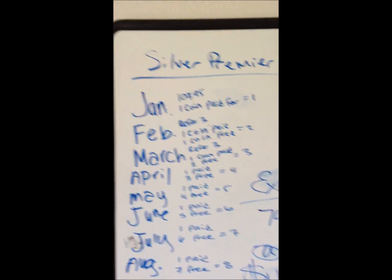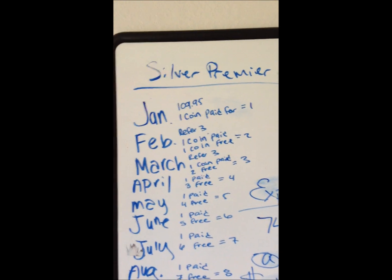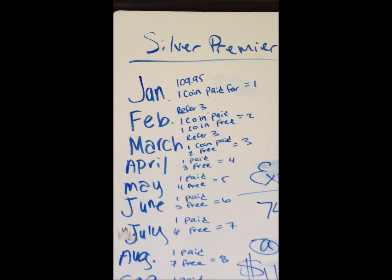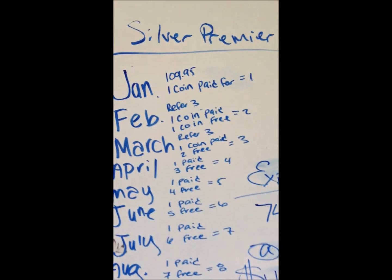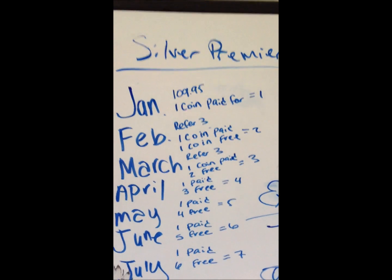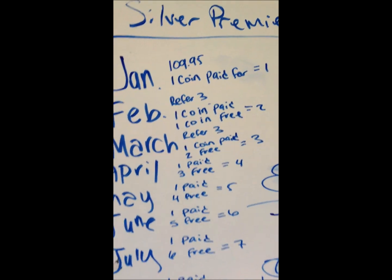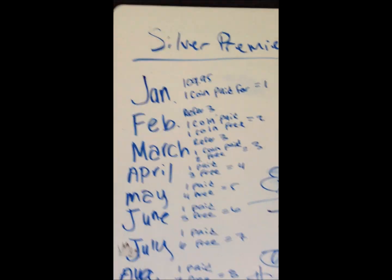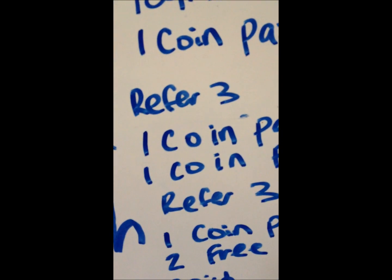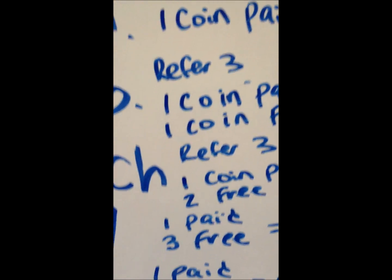Because you know, most people that get into coin collecting, they have no freaking clue. Just like me two months ago, I had no freaking clue what is the numismatic or what the hell are these coins worth. I just knew that they were silver. Excuse my language, I get a little excited. So February, you do the exact same thing. You refer three people again, you pay for one of your coins, you get another coin free. So now you got two.